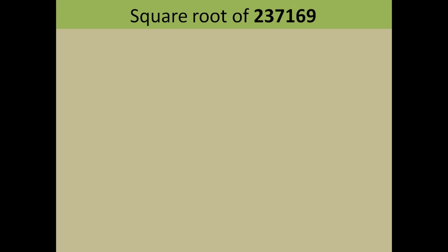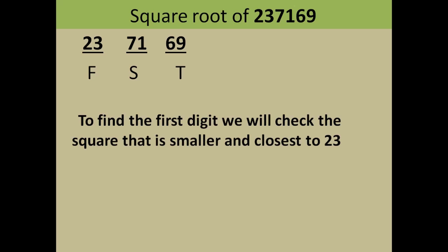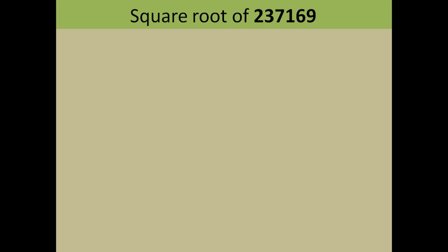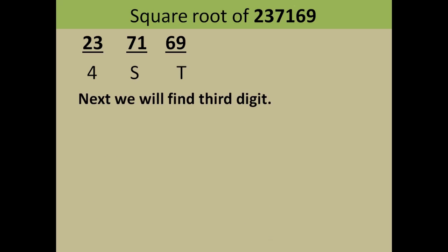Now let's find the square root of 237169. First, divide the number into pairs of two starting from the right-hand side — we have three pairs, so the answer will have three digits: first digit F, second digit S, and third digit T. To find the first digit, we check the square that is smaller and closest to 23, the first pair. The square smaller than 23 is 16, which is 4 squared, so your first digit is 4.